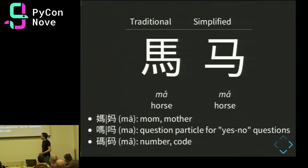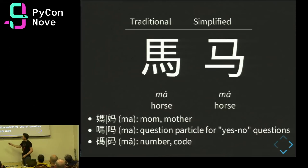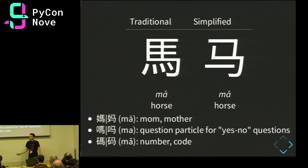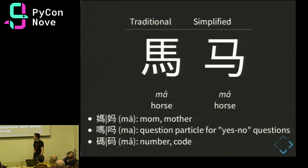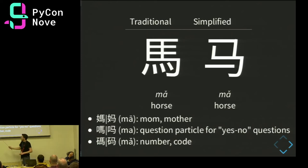All these characters here have the horse radical as a phonetic part, so they're all pronounced 'mā' — but with different diacritical marks indicating different tones, which we'll see next.